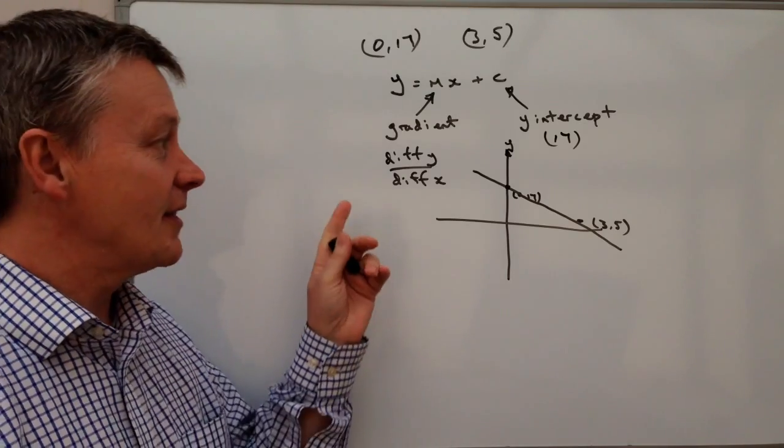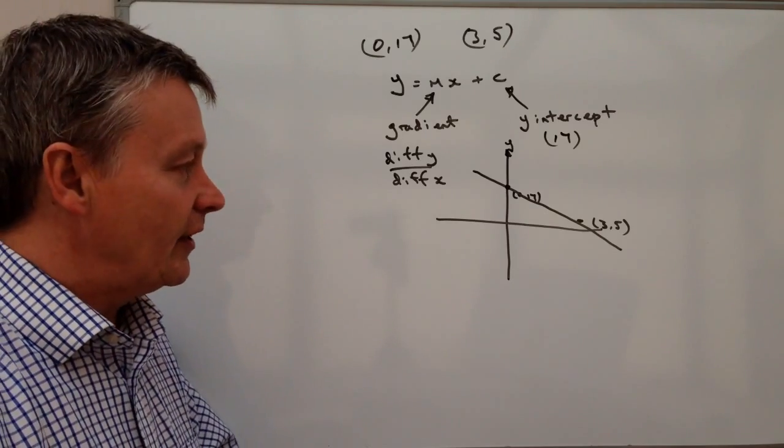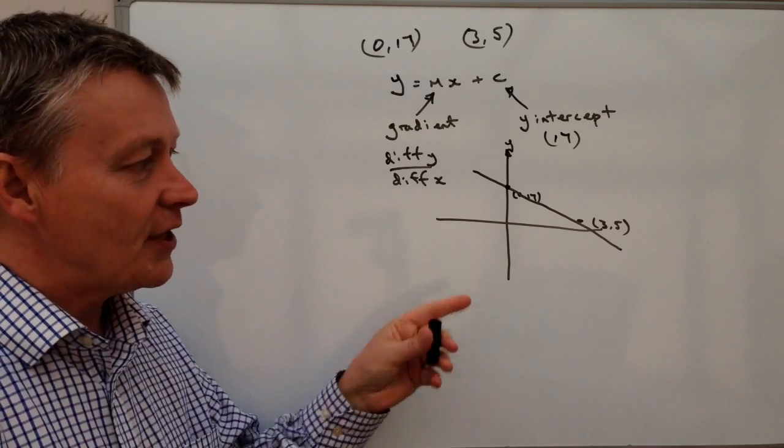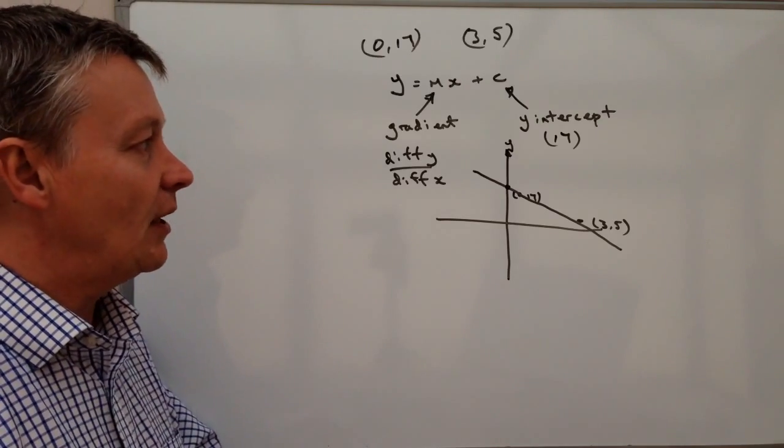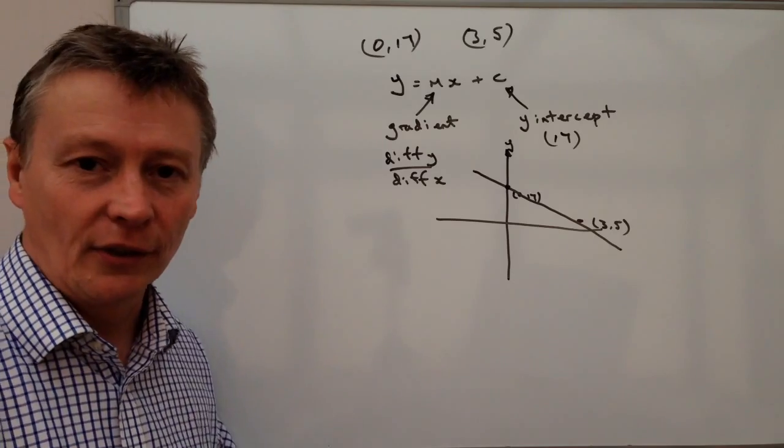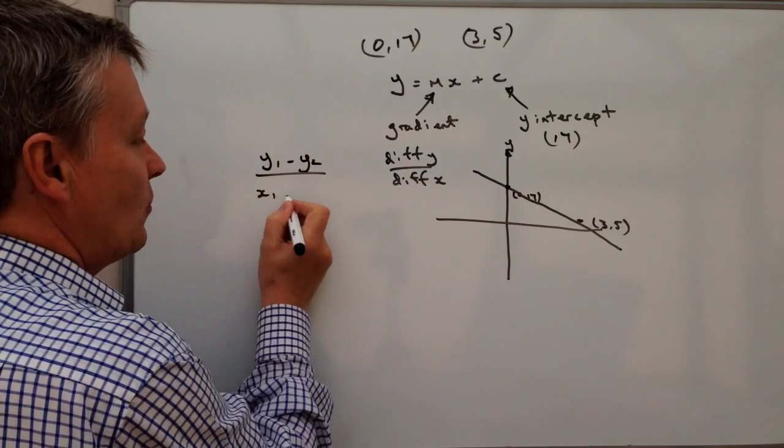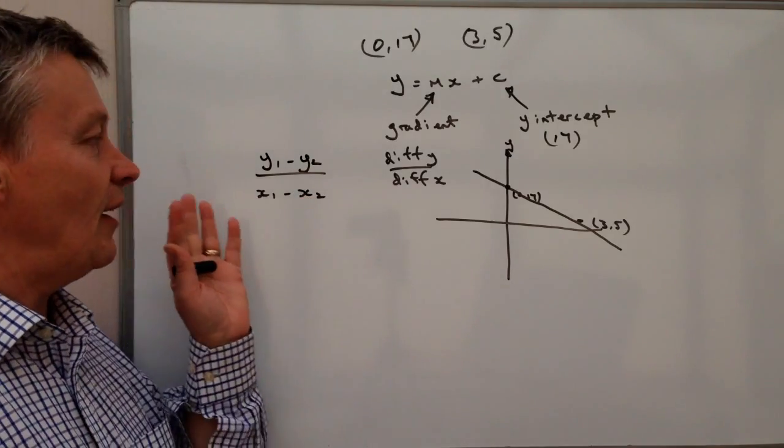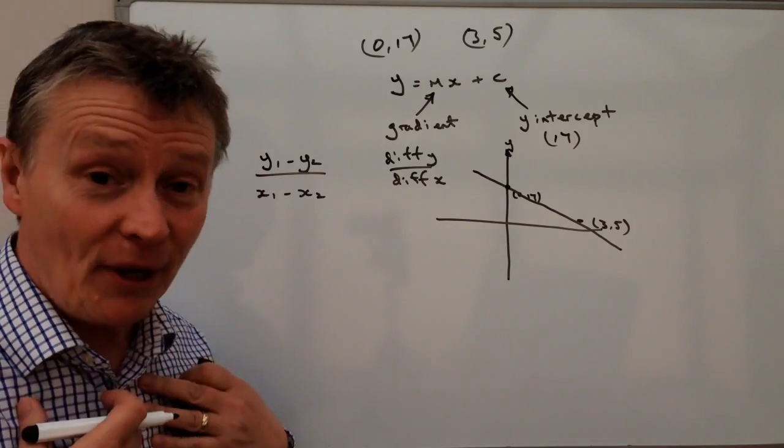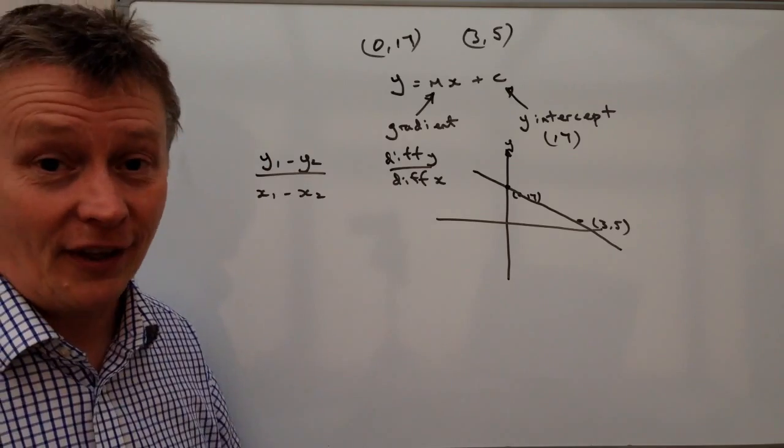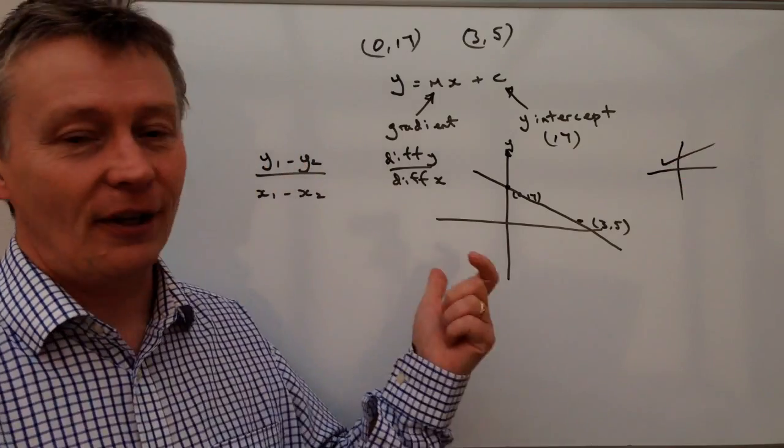The bit I also need to have a go at is going to be the gradient, which is the difference in y divided by the difference in x. Now one of the things about this particular line is that it's a negative gradient. Now there are some ways of doing this where you can look at something that'll say something like y1 minus y2 divided by x1 minus x2, and the idea behind that is that it will account for negative gradients. For me personally, I much prefer just to draw a quick sketch, and then I know it's a negative gradient.